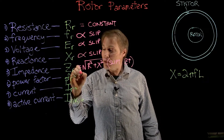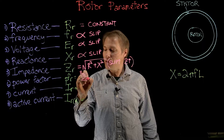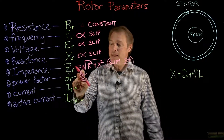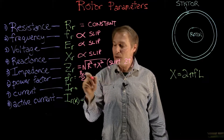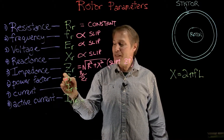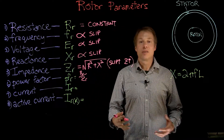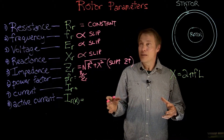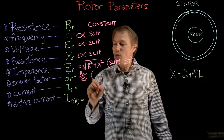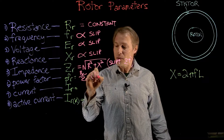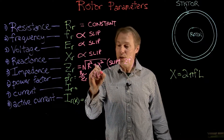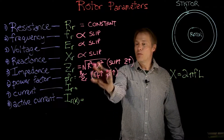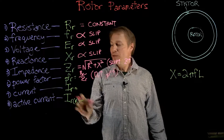Power factor of the rotor — the formula is R over Z, or rotor resistance over rotor impedance. Resistance stays constant; impedance goes up with slip. So if impedance goes up, power factor goes down. As slip goes up, power factor goes down — not directly or indirectly proportional, but that's the direction. Stated the other way: as rotor speed goes up, power factor goes up.